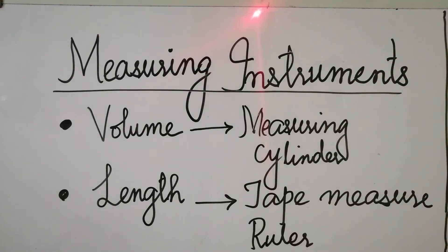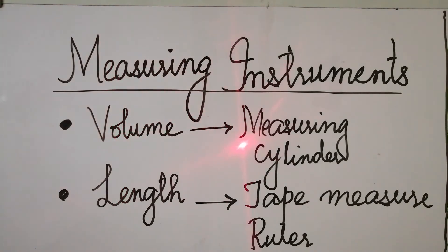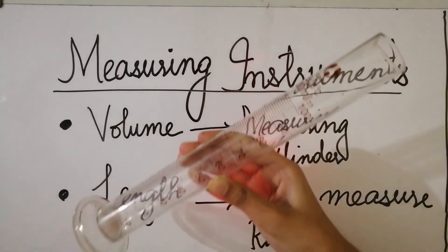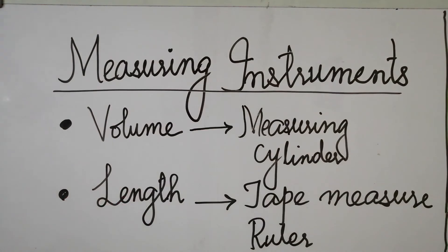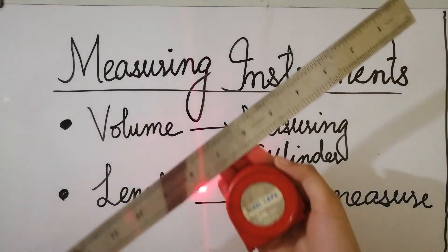In this activity I will show you some measuring instruments. The first quantity is volume — volume can be measured by an instrument called a measuring cylinder, and here you can see one. Another quantity is length — length can be measured by two instruments: a tape measure and a ruler. Here you can see the tape measure and ruler.